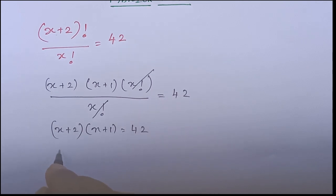So now multiply this: x into x is x square, x into 1 is 1x, 2 into x is 2x, 2 into 1 is 2, which is equal to 42.